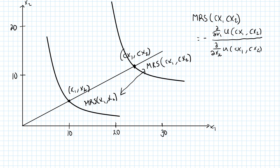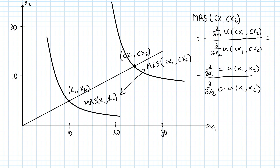If preferences are homothetic, we know that the utility at cx1, cx2 is c times the utility at x1, x2. So I can write this as the partial derivative of c times u(x1, x2) over the partial derivative with respect to x2 of c times u(x1, x2). The constant goes outside the derivative and they cancel. After removing the constant c, we have an expression — minus the ratio of two marginal utilities — now evaluated at x1 and x2.